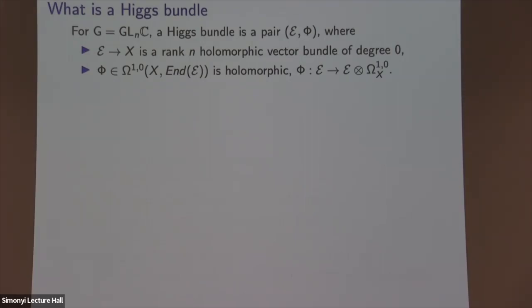For GL(N,ℂ), a Higgs bundle is a pair (E, φ). E is a rank N holomorphic vector bundle on my Riemann surface of degree zero. And φ, called the Higgs field, is a section — specifically a (1,0)-form valued in the endomorphisms of E. So it's an endomorphism times the holomorphic cotangent bundle K, and the condition is that this is a holomorphic object.